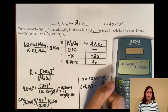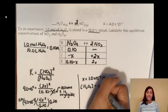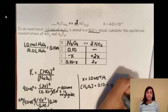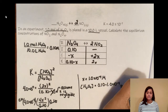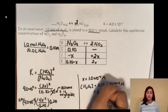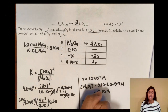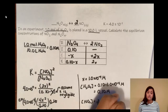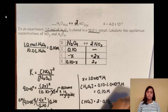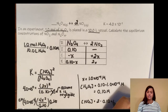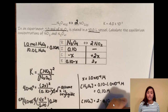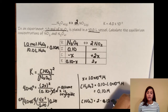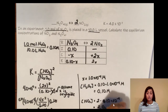Starting with N₂O₄: equilibrium concentration is 0.10 minus x. Plugging in 1.0 × 10⁻⁴ for x gives essentially 0.10 M — confirming the assumption that X is small is valid. For NO₂: 2 times 1.0 × 10⁻⁴ gives 2.0 × 10⁻⁴ M. That's the equilibrium concentration for NO₂.